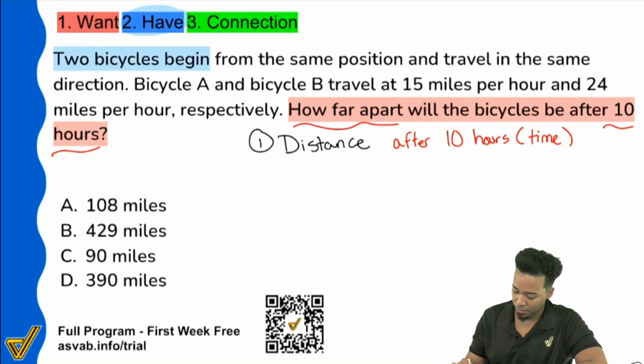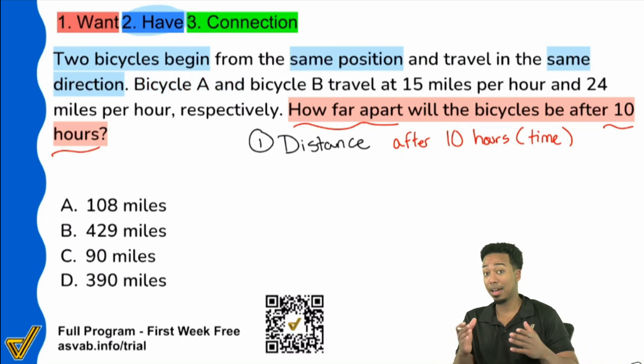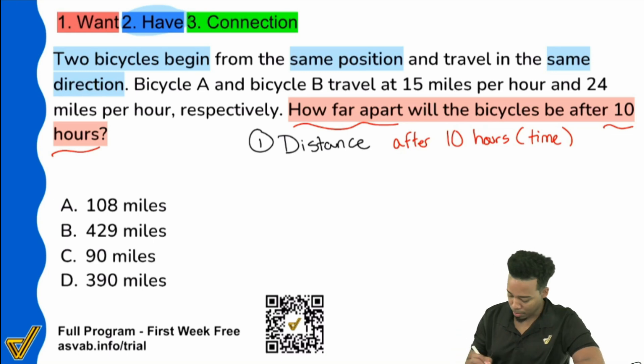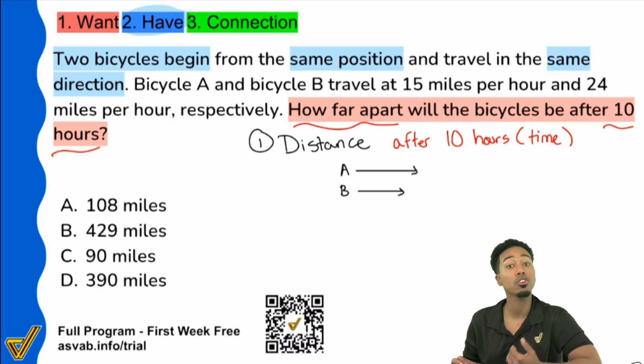So it says two bicycles begin from the same position and travel in the same direction. Notice how that's not math, that's English, but that's going to be way too important for this problem here because we have two bikes. Again, we can say bike A and bike B and they're going in the same direction, going in the same direction. So why is that important? Well, you'll see in a moment because up next it says, hey, bicycle A and bicycle B, so right over here and here, travel at 15 miles per hour and 24 miles per hour respectively. So one of them is going faster than the other. And we see that again, they're going in the same direction.